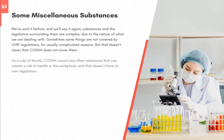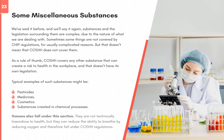Some miscellaneous substances. Sometimes things are not covered by CHIP regulations for complicated reasons, but that doesn't mean COSHH does not cover them. As a rule of thumb, COSHH covers any other substance that can create a risk to health in the workplace and that doesn't have its own legislation. Typical examples include pesticides, medicines, cosmetics, and substances created in chemical processes. Gases also fall under this section — they are not technically hazardous to health, but they can reduce the ability to breathe by reducing oxygen, and therefore fall under COSHH regulations.